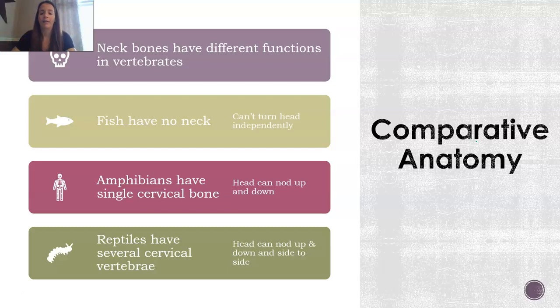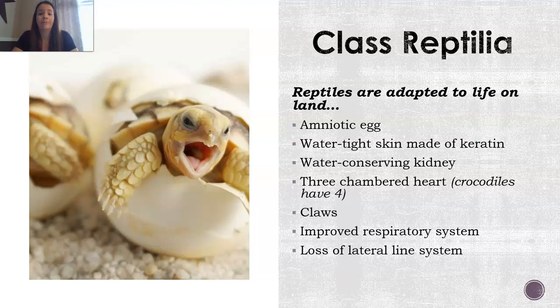When we talk about Class Reptilia, reptiles themselves are adapted to life on land. They have that amniotic egg, which allows them to move away from water. Their skin is watertight and made of keratin, which is a protein. They have a kidney that helps conserve water, a three-chambered heart, claws, and an improved respiratory system with lungs — breathing that way versus through their skin like many amphibians. They also lose that lateral line system.